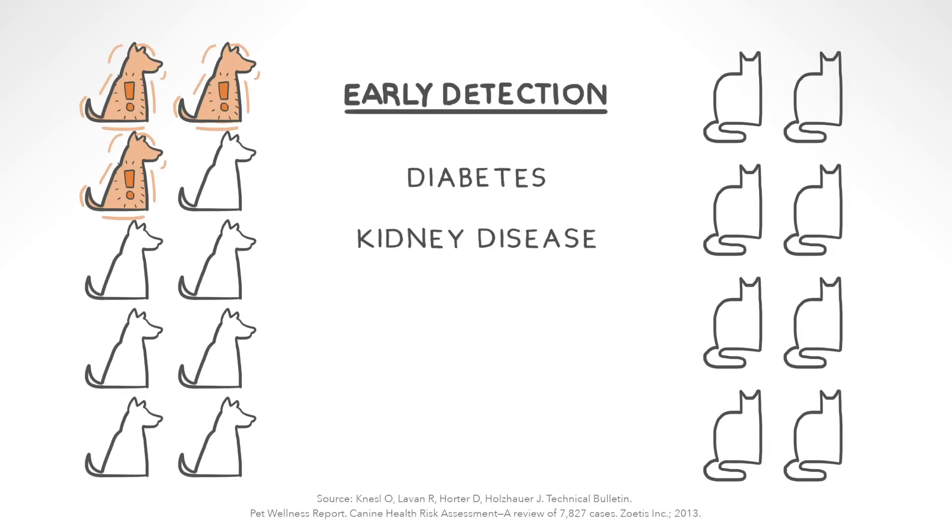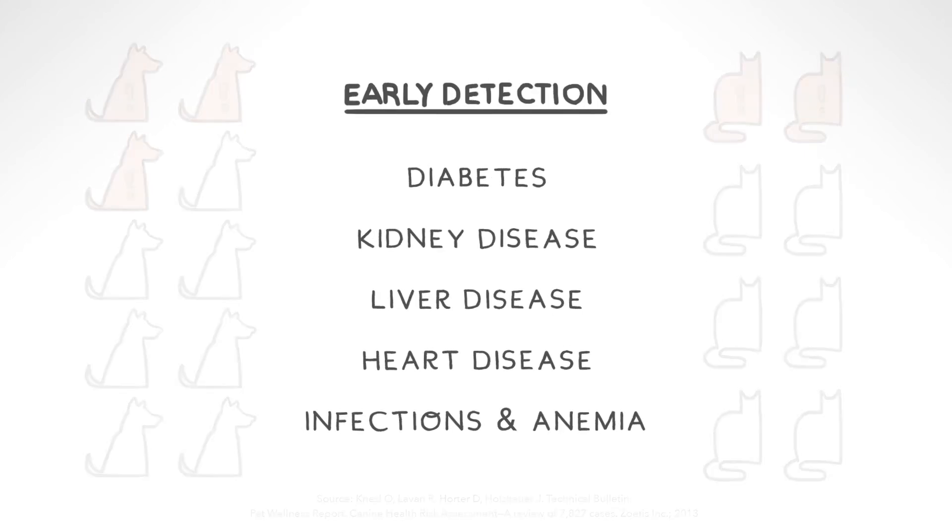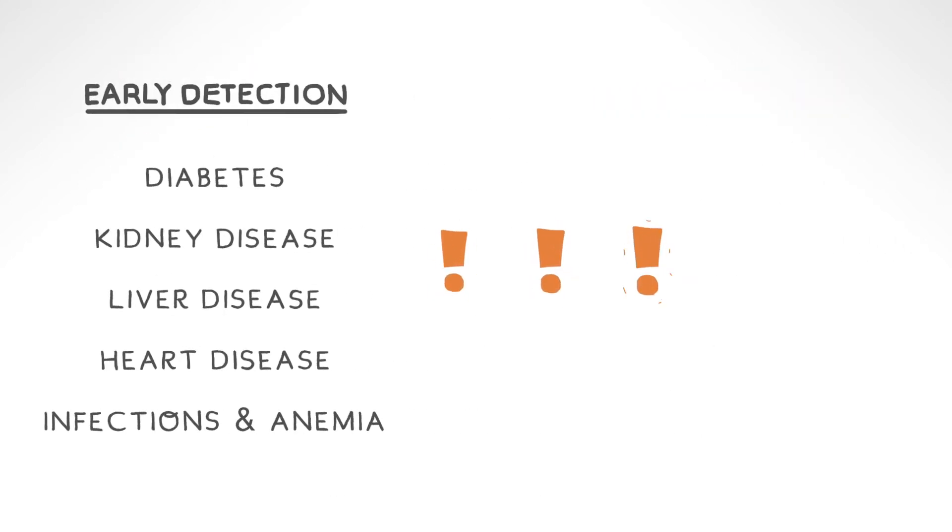Abnormal results are found in around 30% of apparently healthy dogs and 25% of apparently healthy cats. But the good news is, many issues when caught early by wellness testing can be treated successfully and cost-effectively.